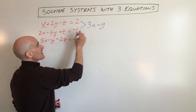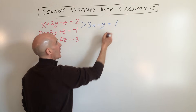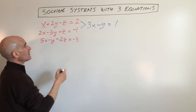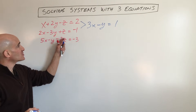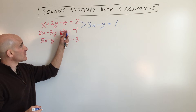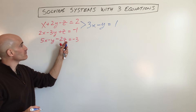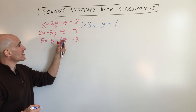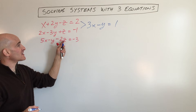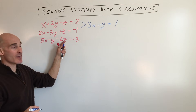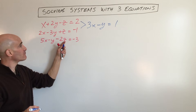The z's are going to cancel, equals 1. Now, we want to use all three equations. We used the first two, and we want to use the third one. So let's go ahead and combine it with the second one. You can combine it with the first or the second, but you want to use that third equation so we use all three.